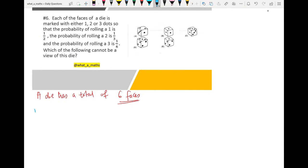First, we consider rolling a 1. Now the probability of rolling a 1 is equal to 1 over 2.